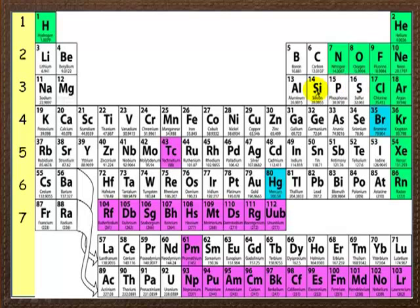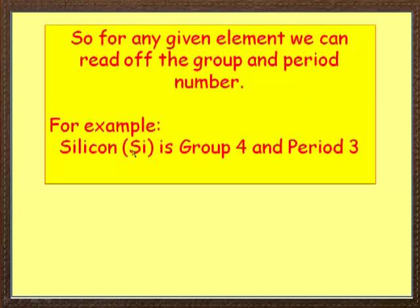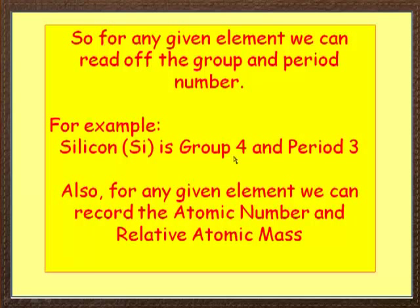Let's look at silicon. Now silicon, as you can see, is in group 1, 2, 3, 4 and in period 1, 2, 3. Just check it. Silicon is in group 4 and period 3.